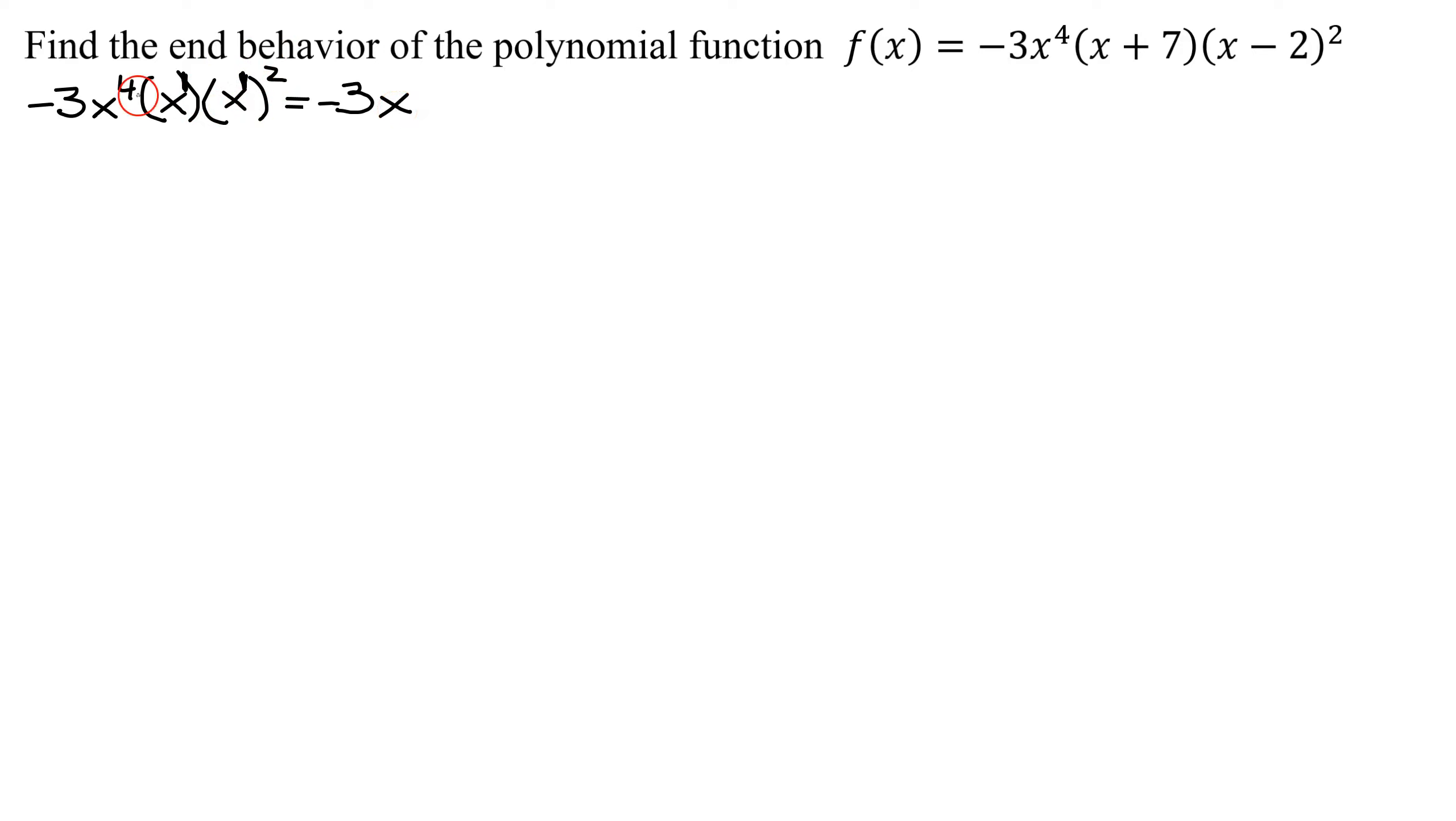So what's the power on my x? It's 4 plus 1 is 5, plus 2 is 7. So I know if I multiplied out my polynomial, I get -3x^7 plus a whole bunch of other terms that have lesser degrees.